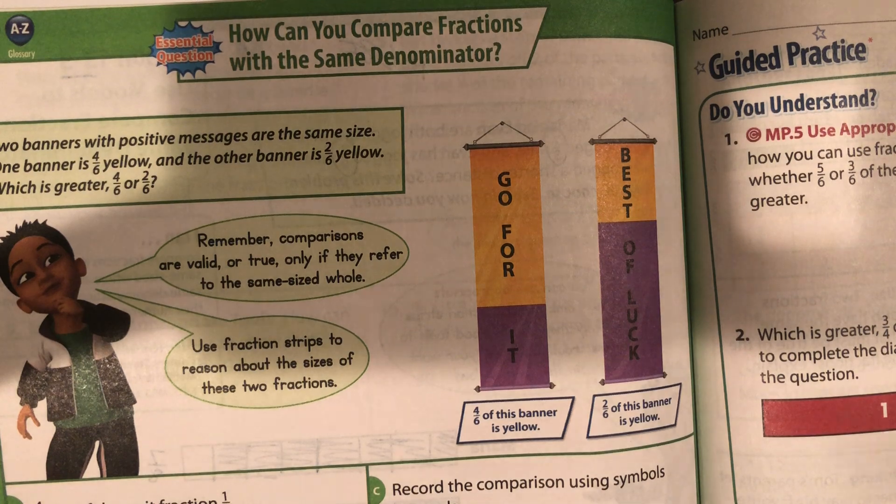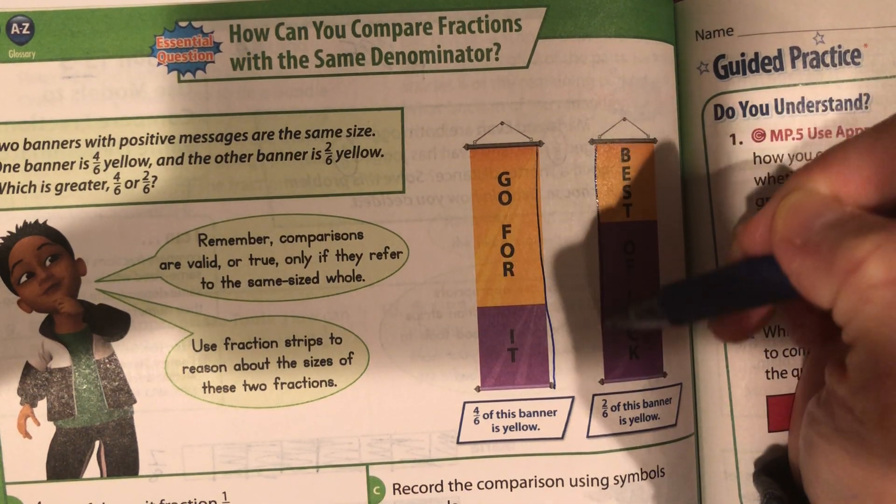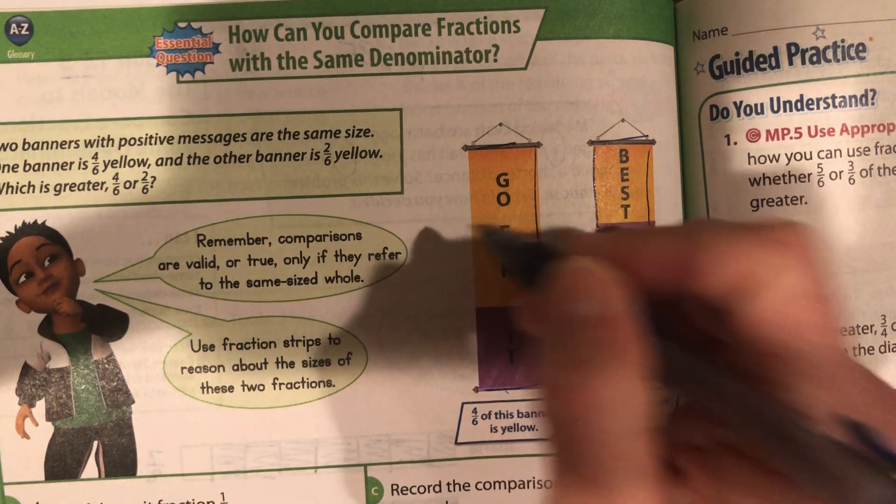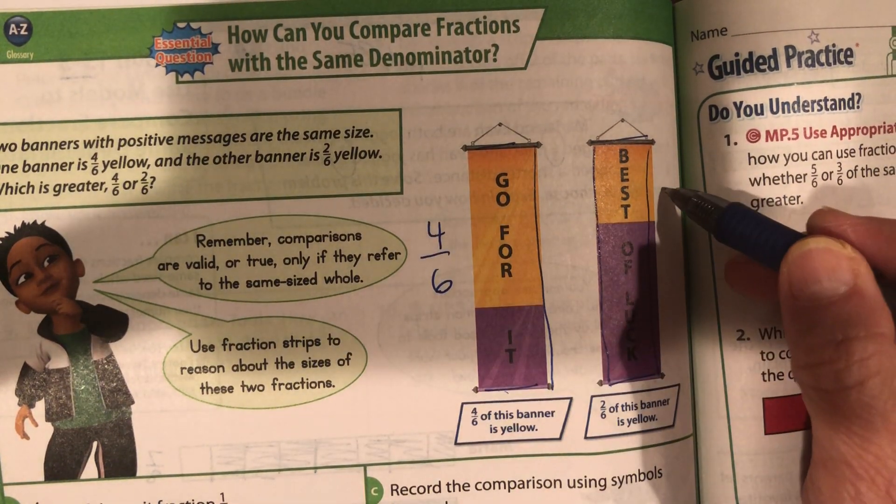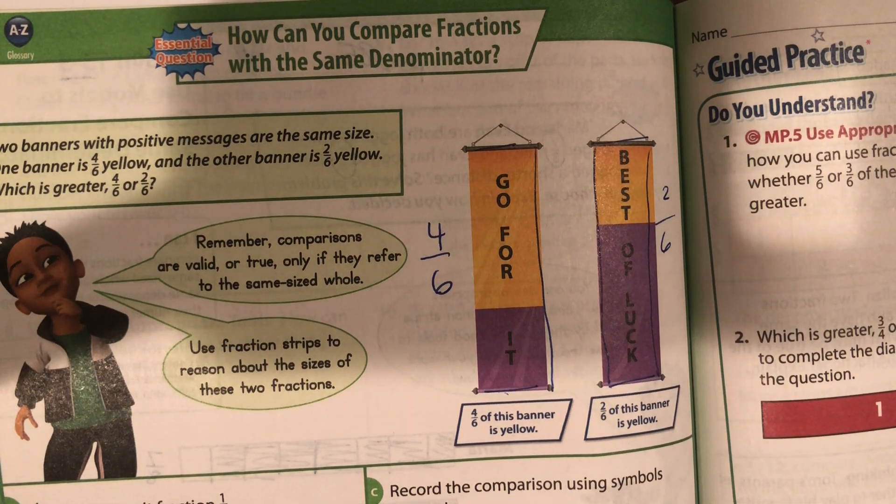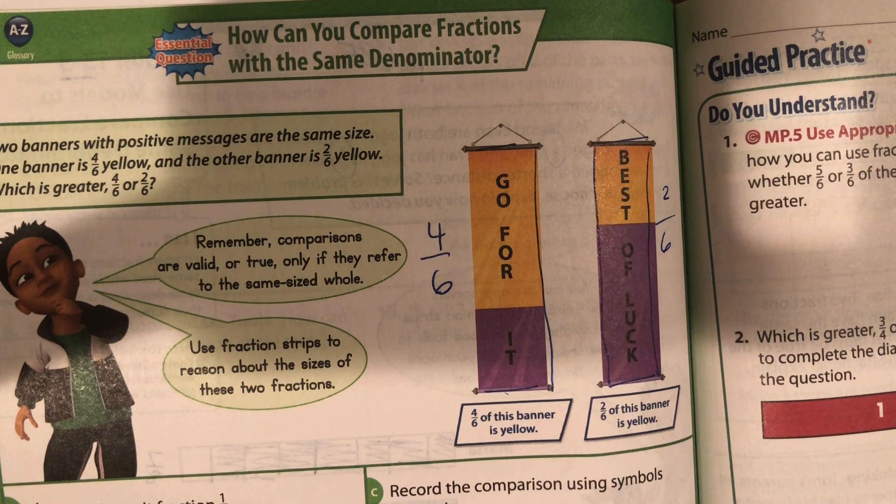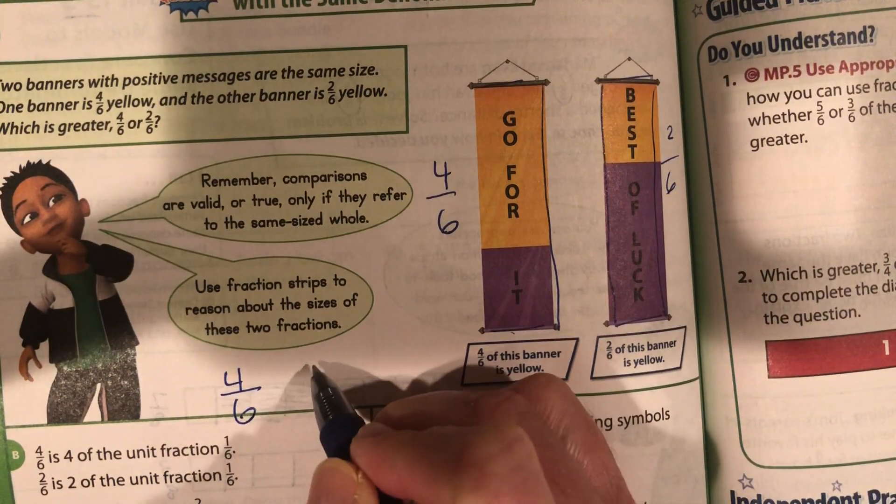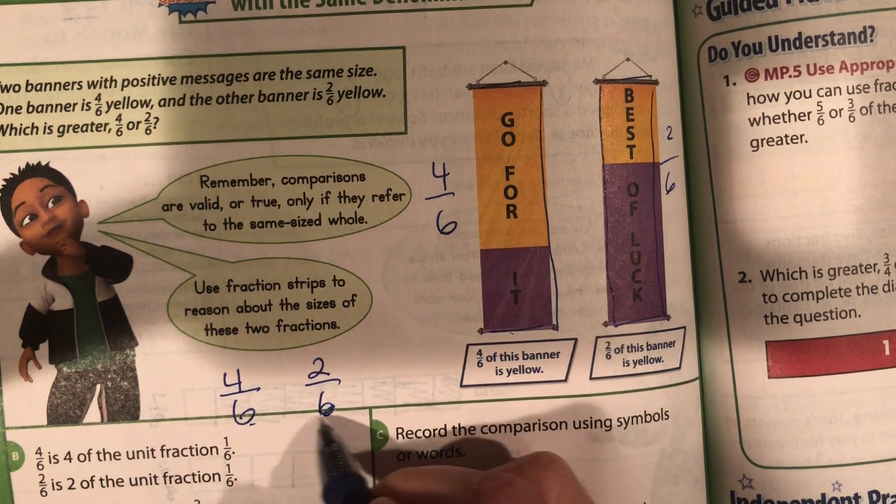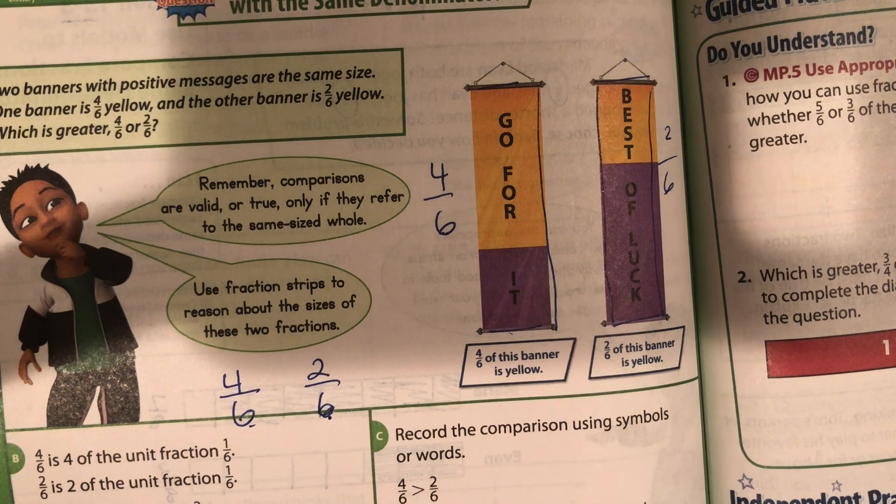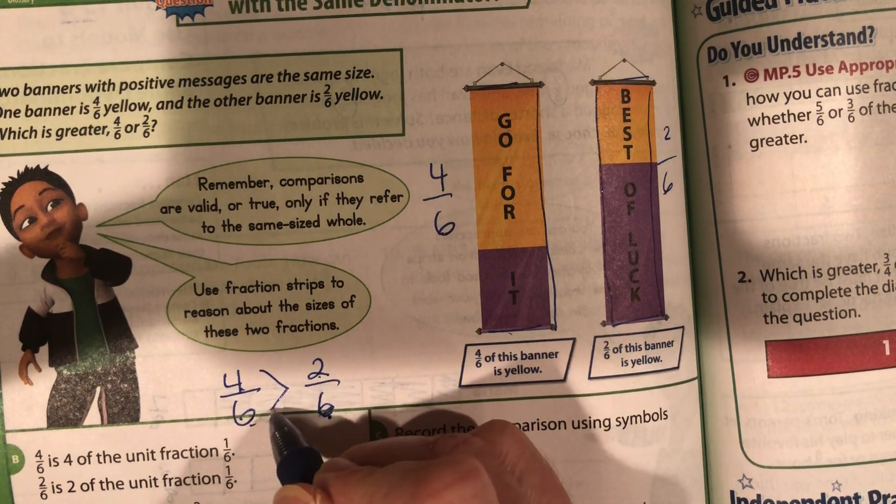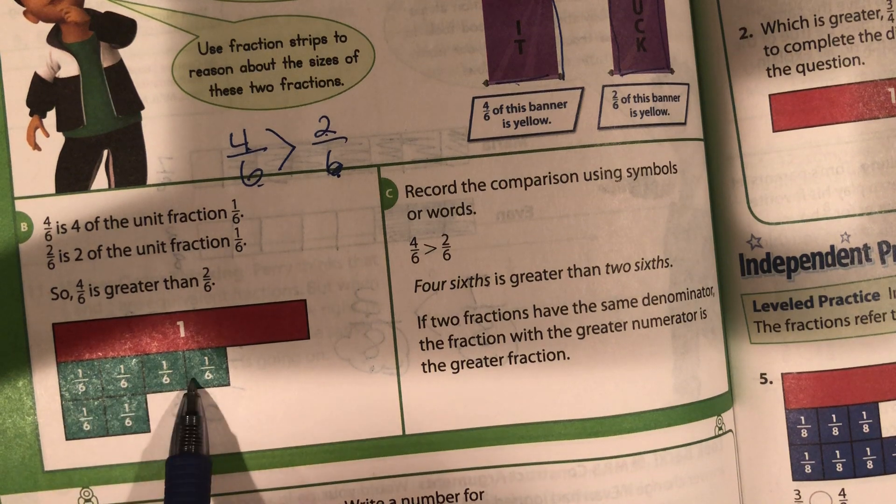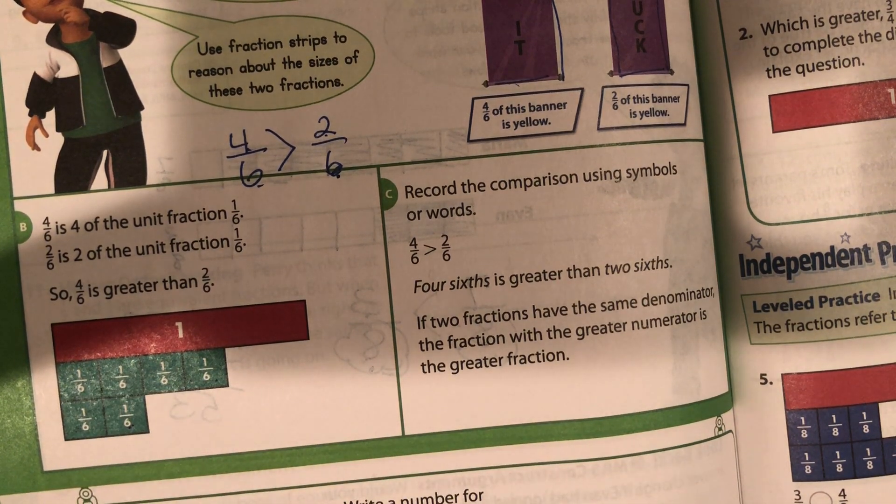Two banners with positive messages are the same size, go for it and best of luck. There are two banners lined up. One banner is four-sixths yellow and one banner is two-sixths yellow. Remember, comparisons are only valid if they refer to the same size whole. They're both broken up into six equal pieces. If we have four-sixths compared to two-sixths, first thing we check, are our denominators the same? If they are, easy-peasy lemon squeezy, we are golden. Four is more than two, so four-sixths is greater than two-sixths. Here you have four-sixths, here you have two-sixths. Clearly four-sixths is more than two-sixths.